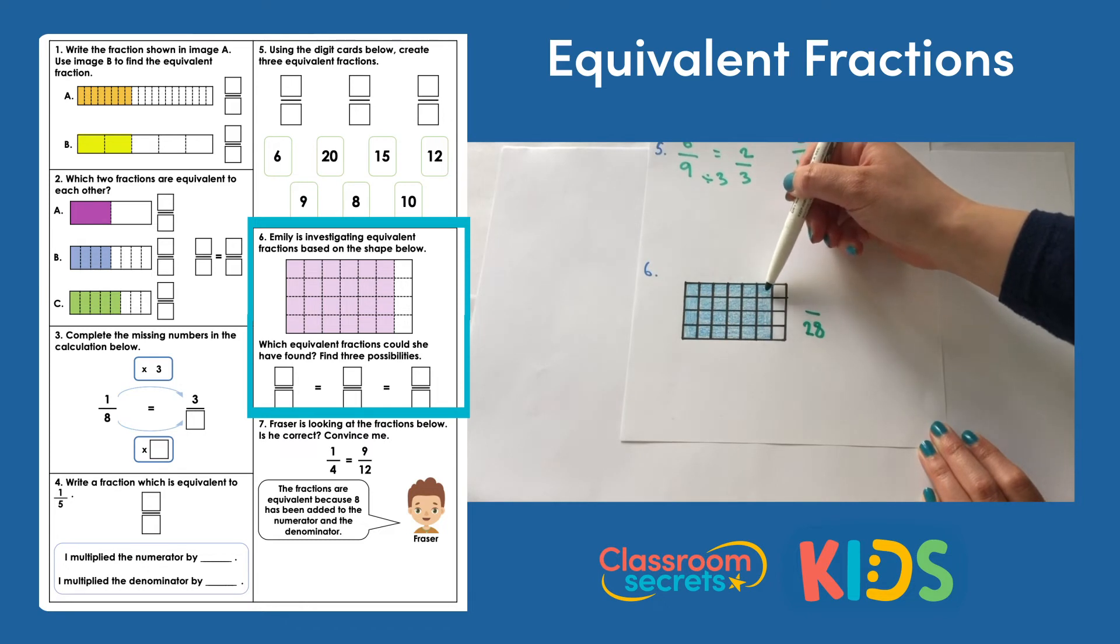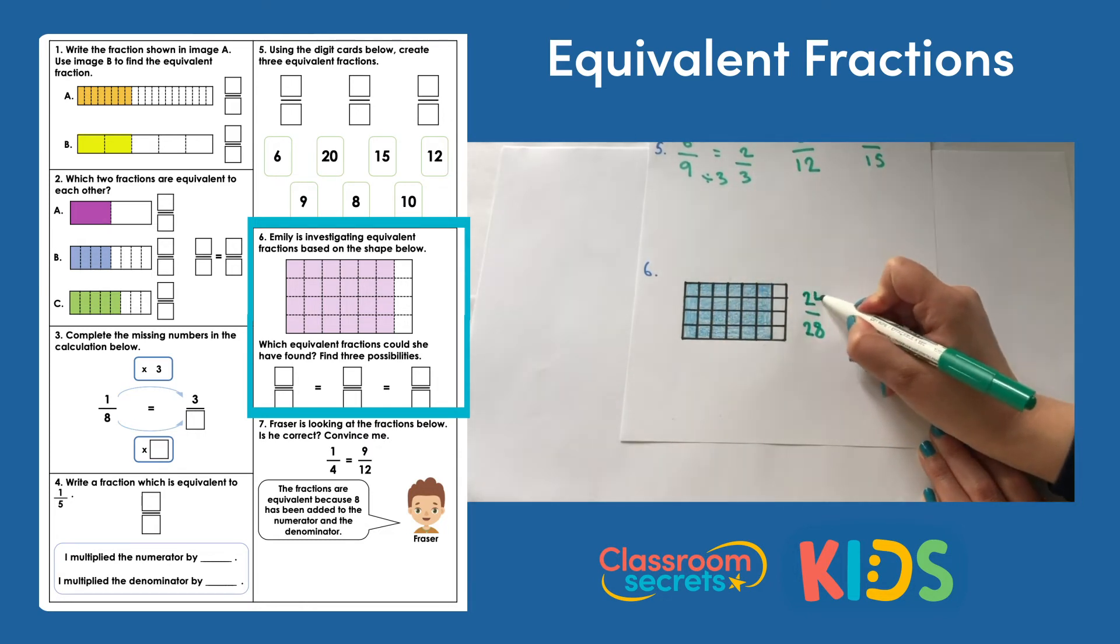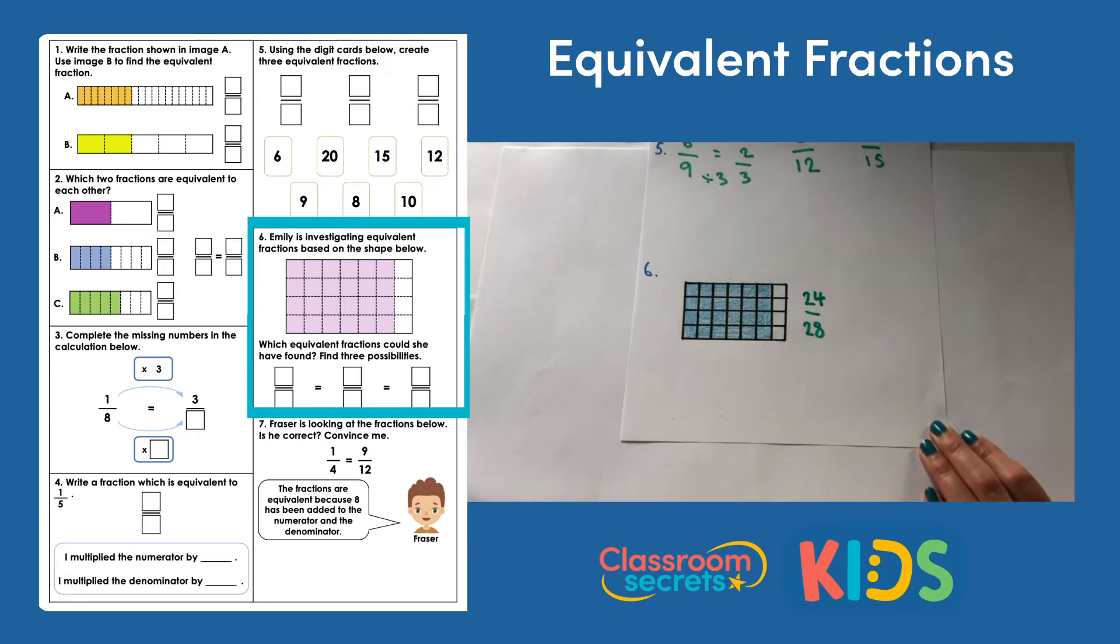If I multiply my 7 by 4, I can say that I have 28 squares altogether. After the 28 squares altogether, I have 1, 2, 3, 4, 5, 6. I have 4 lots of 6, which is 24. So that's the fraction that is shaded, 24 28ths.